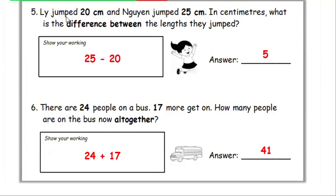Number 5. Lee jumped 20 centimeters and Queen jumped 25 centimeters. What is the difference between the lengths they jumped? Working: 25 minus 20. Answer: 5.